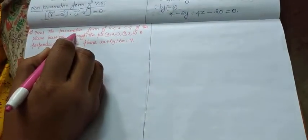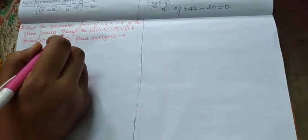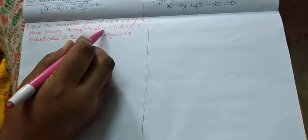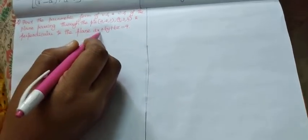Come to the second sum. Find the parametric form of vector equation and Cartesian equation of a plane passing through the points (2, 2, 1), (9, 3, 6) and perpendicular to the plane 2x + 6y + 6z = 9.